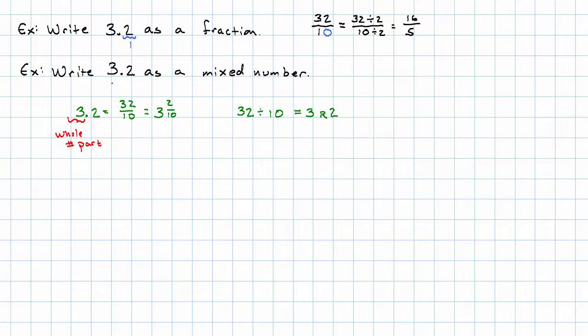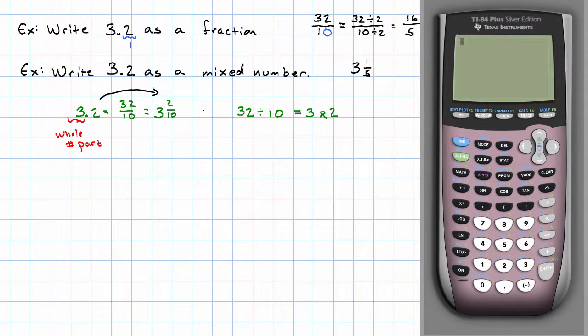So when we make 3.2 into a mixed number, we can go directly to 3 and 2 tenths. And then noticing that we can divide the numerator and denominator both by two, we get 3 and 1 fifths. Going to the calculator again. 3 is our whole number part. We take .2 and make it into a fraction. We get 1 fifths. That's amazing.